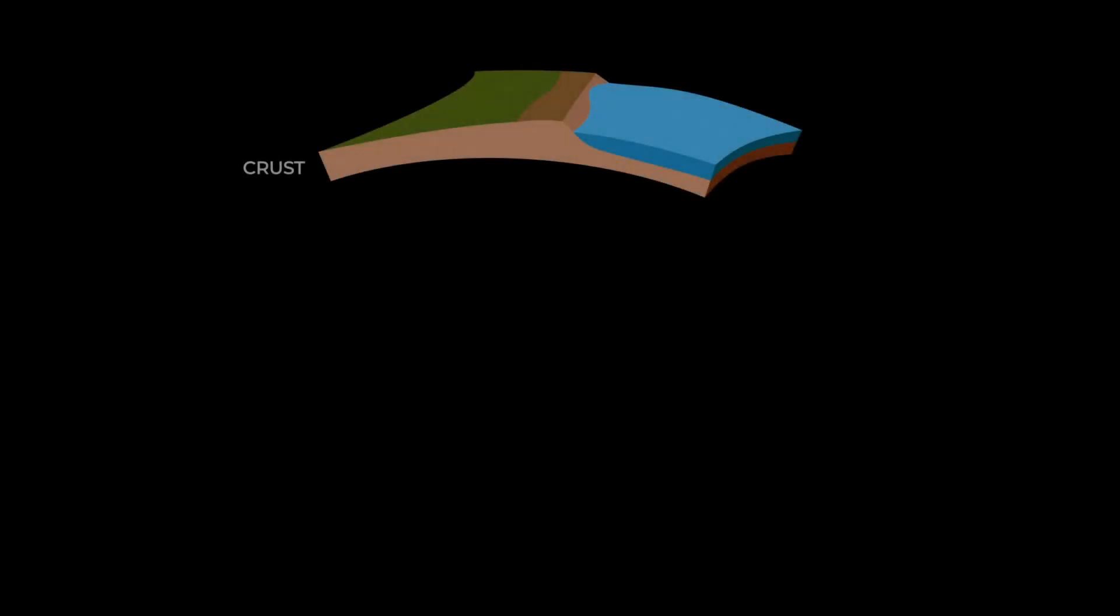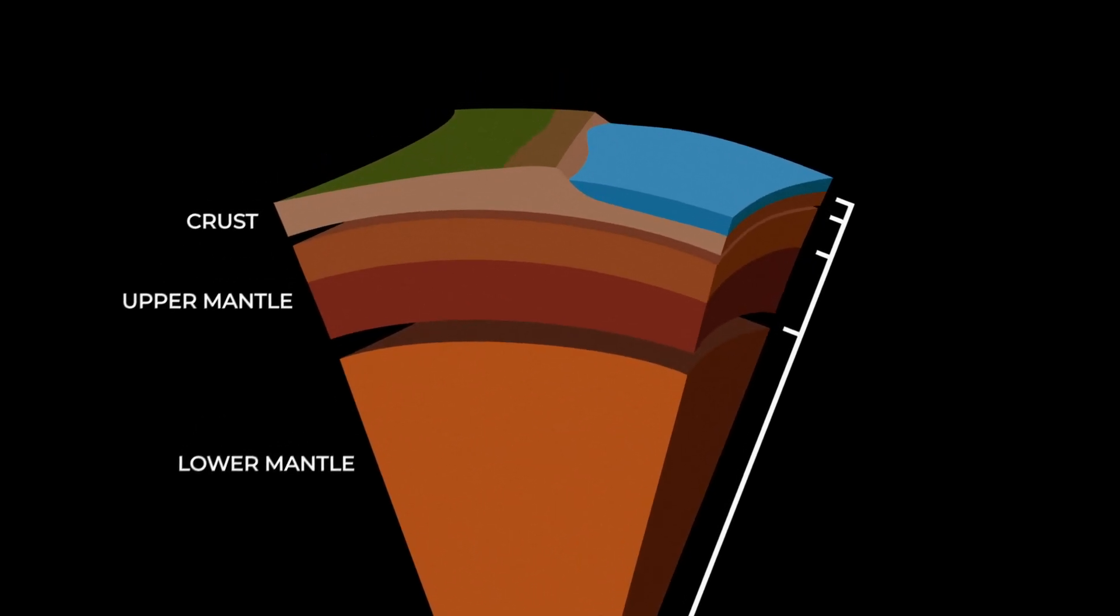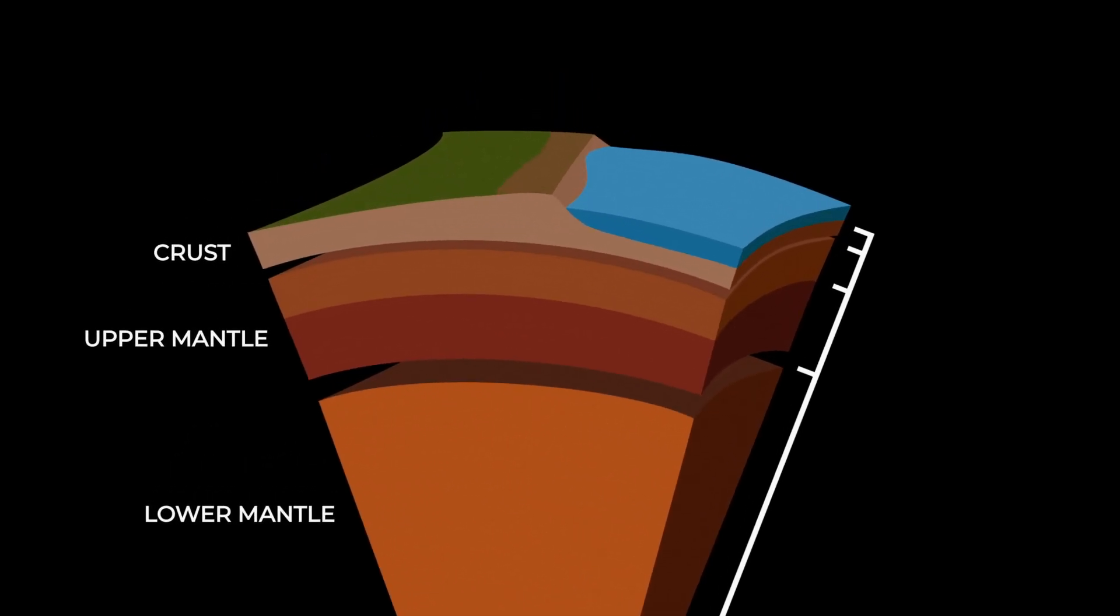Just below the crust is the mantle, which is also made of rocks and minerals. The mantle is separated into two layers, the upper mantle and the lower mantle. The upper mantle, which is closer to the Earth's crust, has lower pressure and cooler temperatures than the lower mantle.